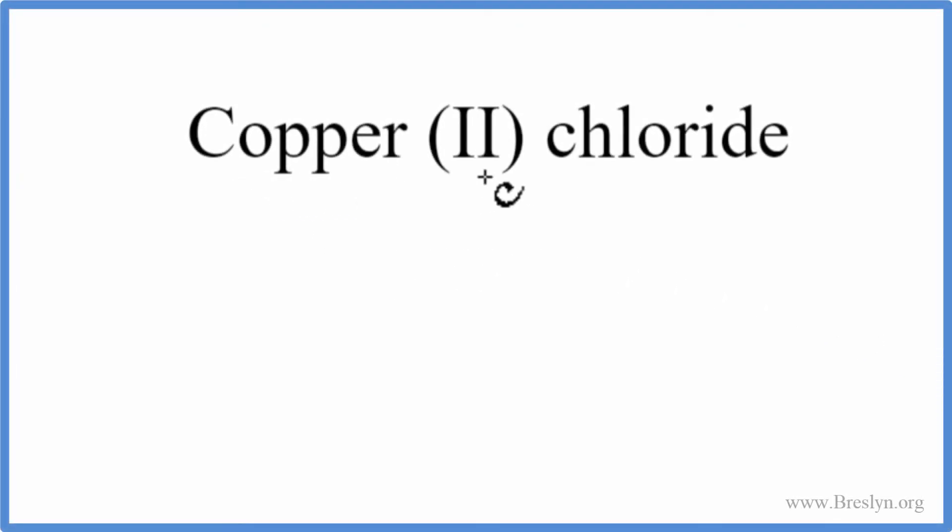To write the formula for copper(II) chloride, we go to the periodic table and look up copper, which is Cu, and then we have chloride, which is Cl. That's the chlorine.